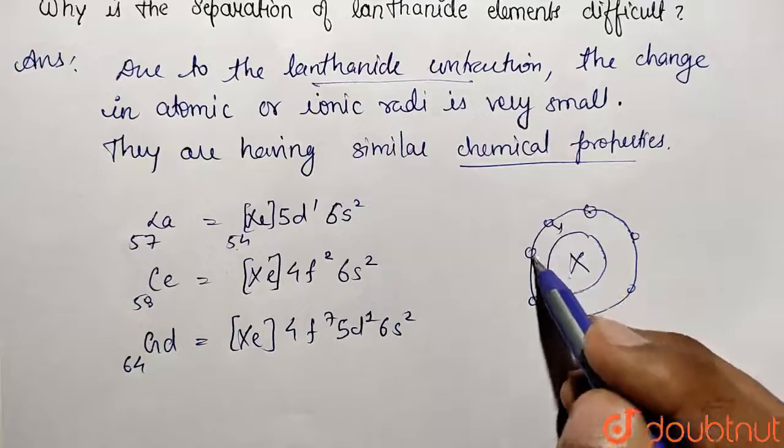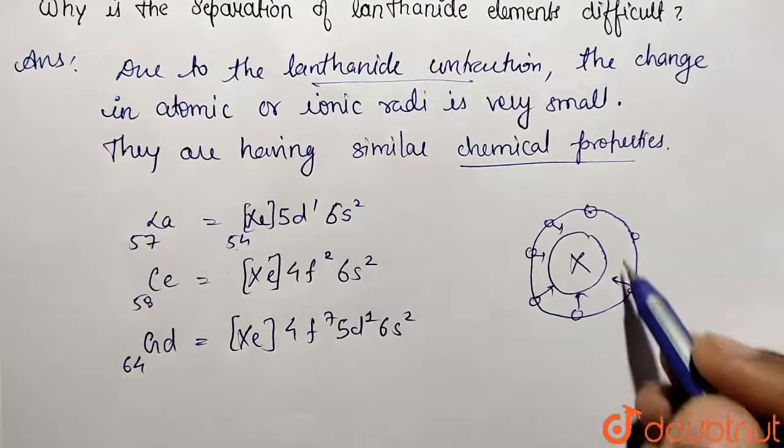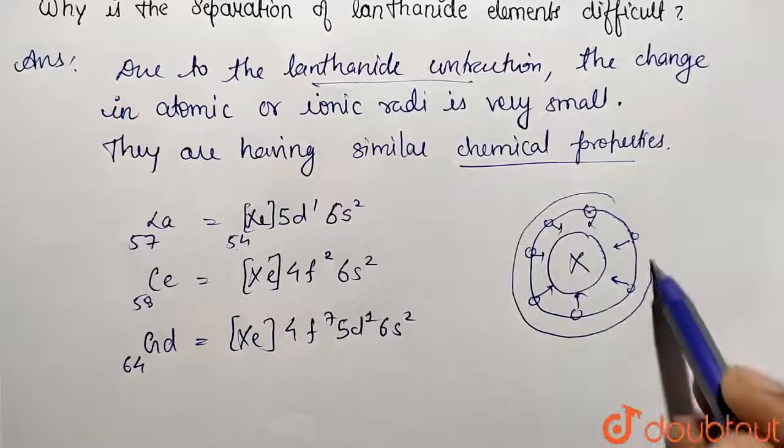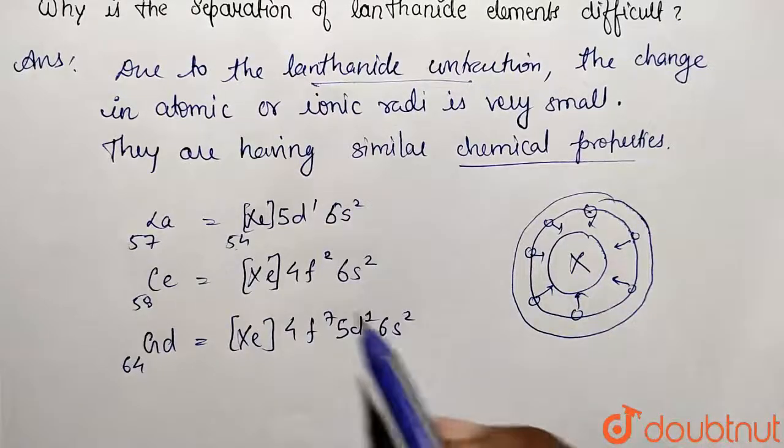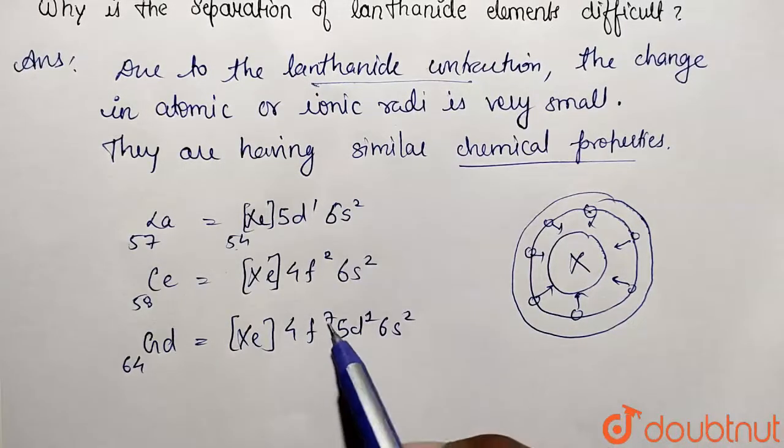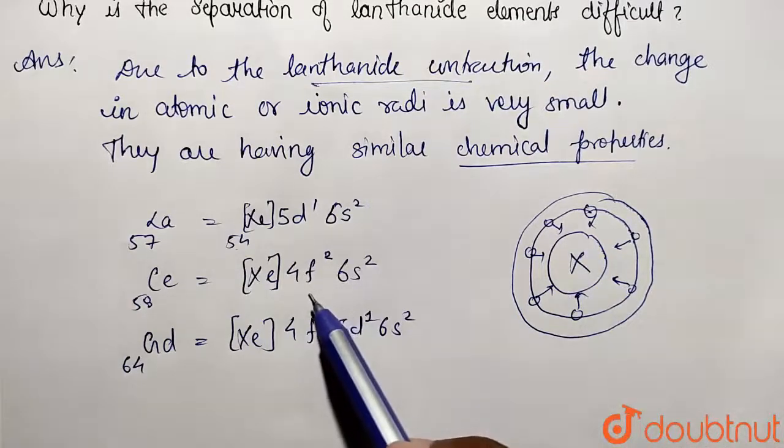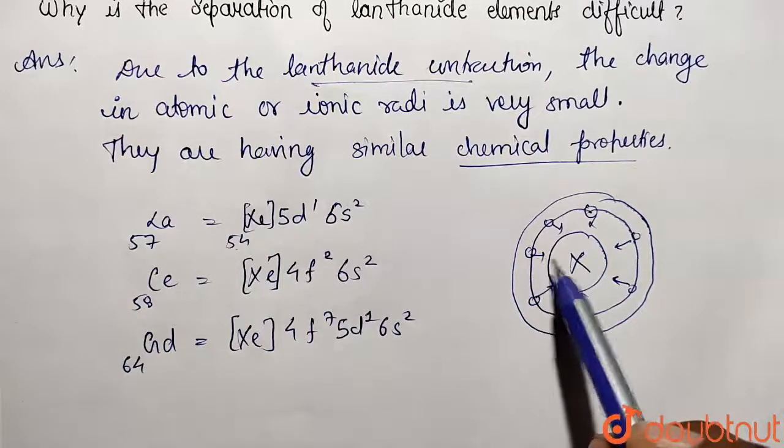The effective nuclear charge is going to attract these electrons towards inside, and there is going to be reduction in the size of this element. So elements followed in the lanthanide series are having very very smaller size because of this inner filling of 4f subshell, due to which the size reduces.